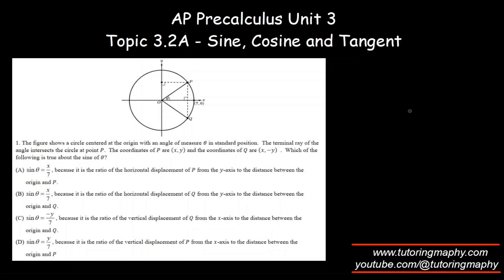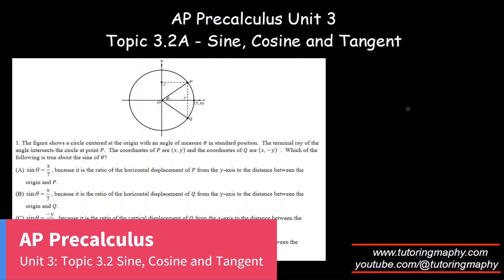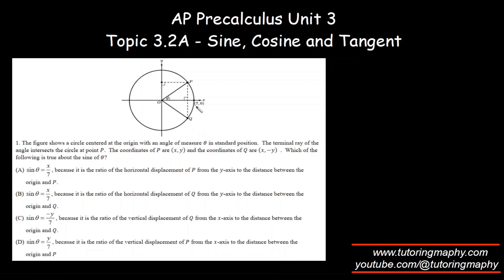This is 3.2 of unit 3: sine, cosine, and tangent. Let's start with this question. This figure shows a circle centered at the origin with an angle measured in standard position, and the terminal ray of the angle intersects at P. The coordinates of P are x, y, and the coordinates of Q are x, y. So the following is true about sine of theta.